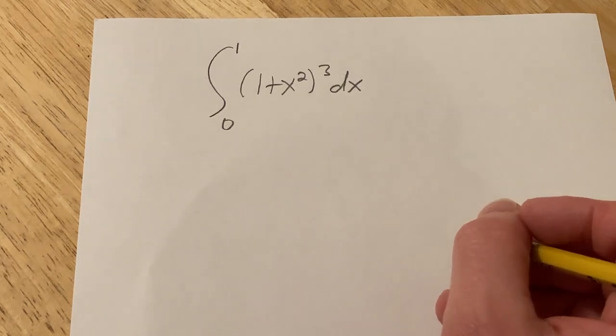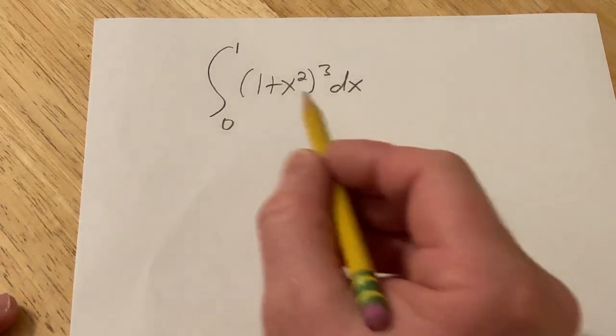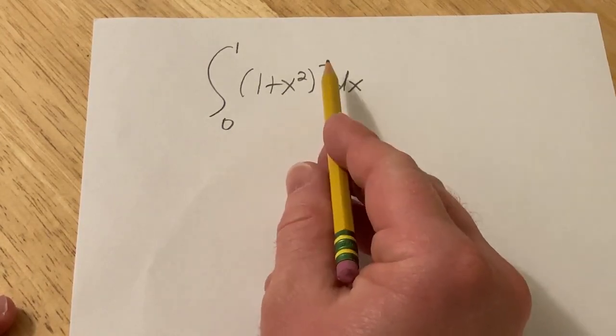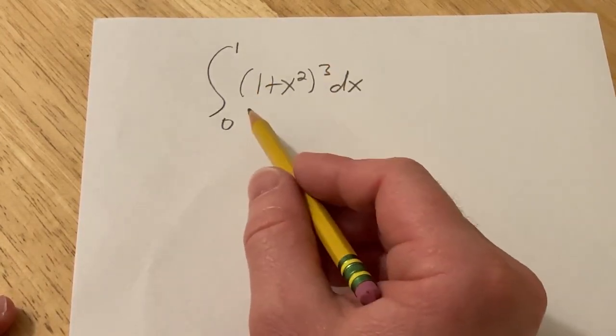Hi, in this problem we're going to work out this definite integral. So we have to integrate 1 plus x squared cubed with respect to x from 0 to 1.